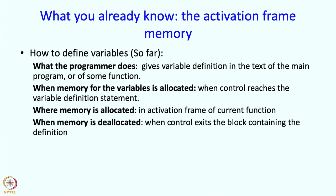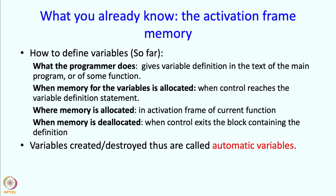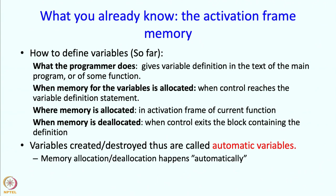The memory will also be deallocated — when control exits the block containing the definition. It could be exiting the function, or it could be a for statement whose control variable is getting deallocated. Variables which are created and destroyed in this way are called automatic variables — automatic because the memory allocation and deallocation happens automatically. At least the deallocation is indicated by the end of the block, and the user is not explicitly giving up memory.